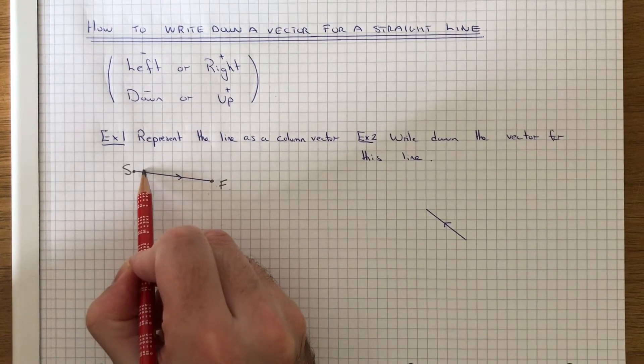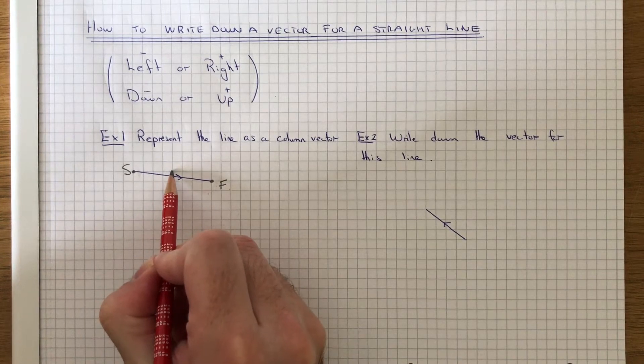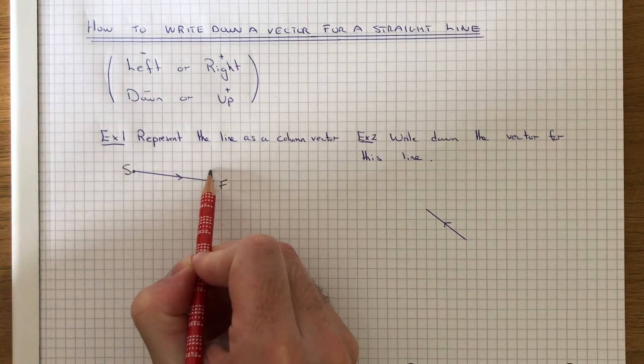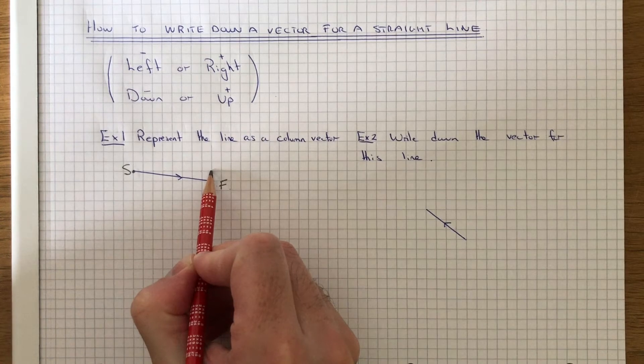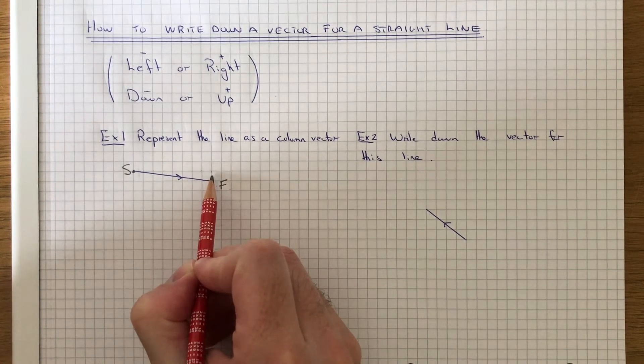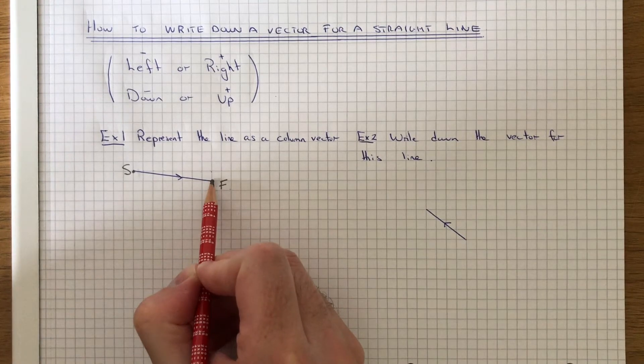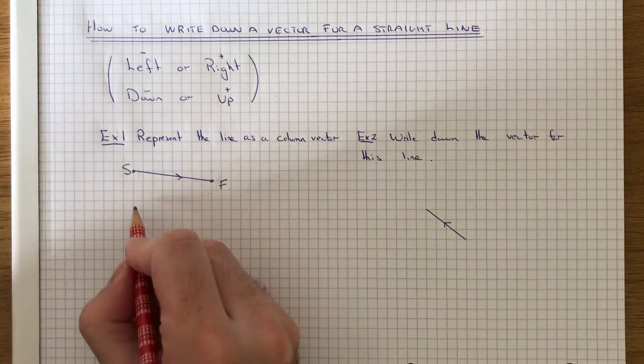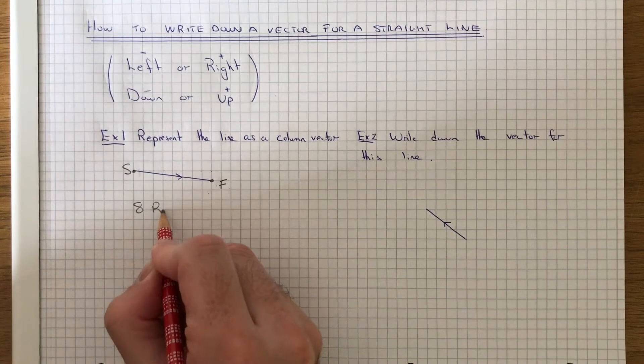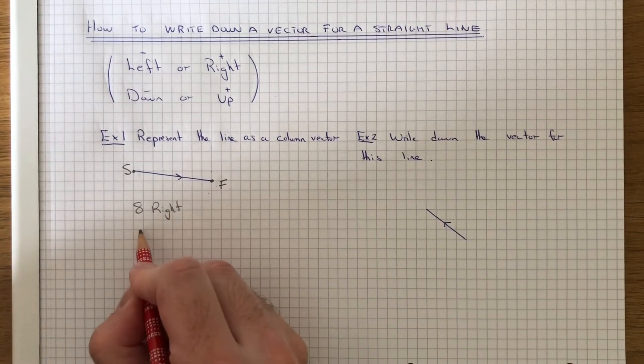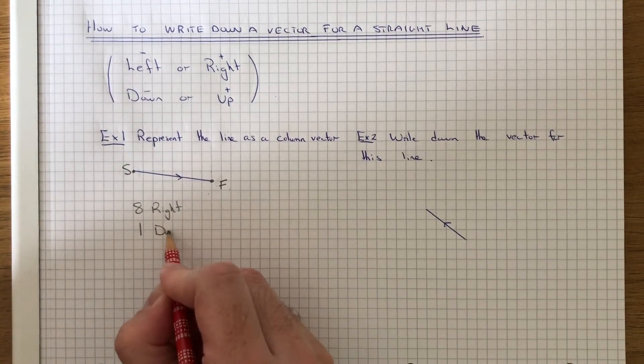So it's 1, 2, 3, 4, 5, 6, 7, 8. So it's 8 squares to the right. And then we've got to see how many squares down or up it is. So it would be 1 square down. So it's 8 to the right and 1 square down.